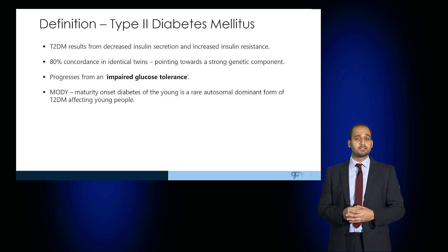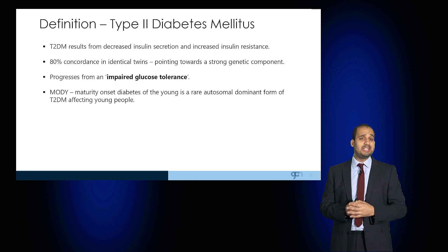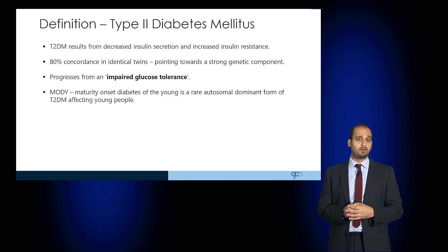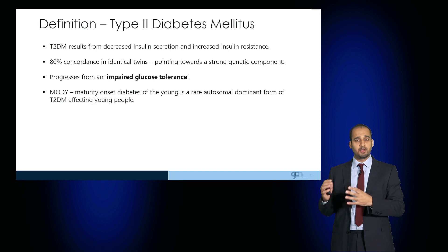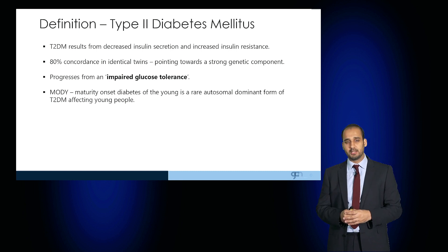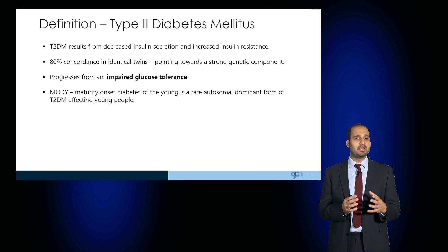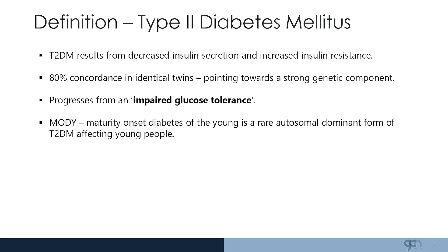Diabetes results from decreased insulin secretion and insulin resistance, and there is an 80% concordance in identical twins, pointing towards a strong genetic component. This progresses from an initial impaired glucose tolerance. There is also maturity onset diabetes of the young, which is a rare autosomal dominant form of type 2 diabetes affecting young patients.